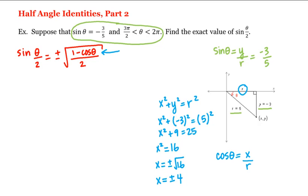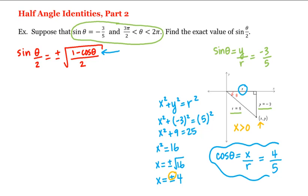But x is in quadrant four, and in quadrant four x is greater than zero. Therefore, we're going to choose the positive value, and cosine of theta is equal to positive four divided by five, which we can plug into our half-angle formula.